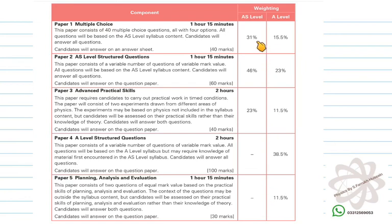AS results is divided into these three papers so 31% is for paper one, 46% is for paper two and 23% is for paper three. Whatever you score in AS becomes 50% of A level result while 50% is what you will be doing in the second year of the A levels physics.